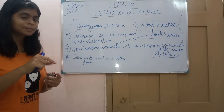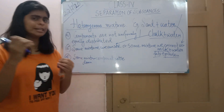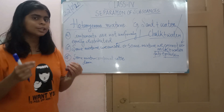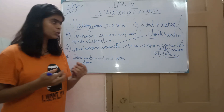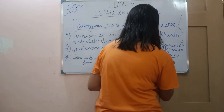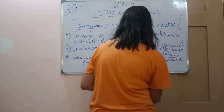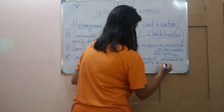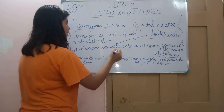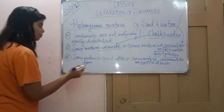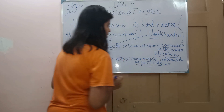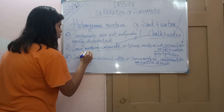But in some heterogeneous mixtures — like milk — how long you keep it, the components do not settle. Have you ever seen the milk getting settled? Even if you keep it in a fridge, you cannot see separate layers. You can't distinguish whether it is fat or protein. So in some heterogeneous mixtures the components do not settle down. For settling: chalk plus water. For not settling: milk.